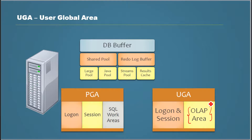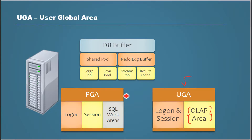There is also one more area which holds online analytical processing related information. For example, if someone accesses an OLAP cube — you can look up 'OLAP cube' in Google for more detail — that information will be stored there. That section is called UGA, the User Global Area, and it is generally part of the PGA in a dedicated server environment.